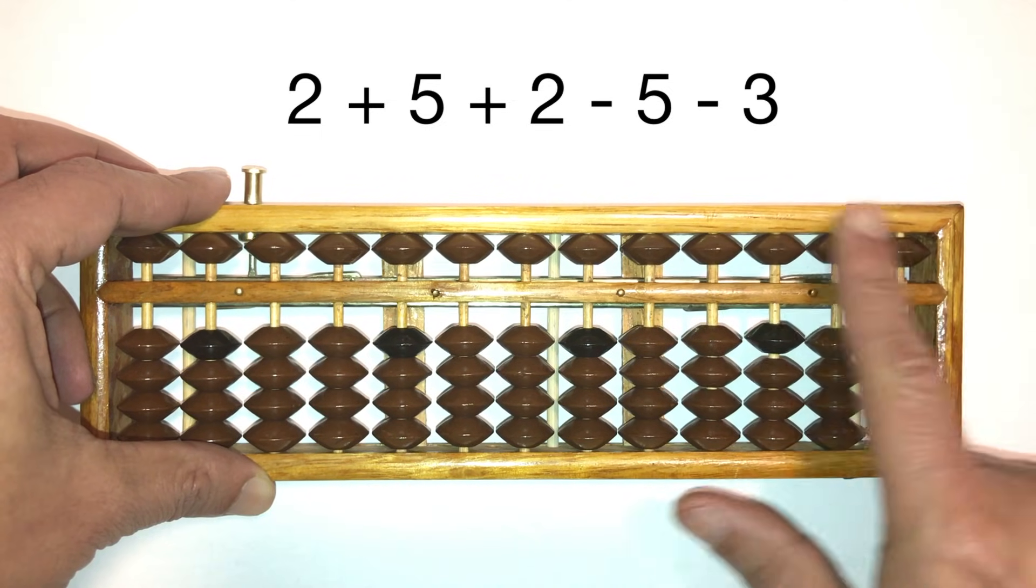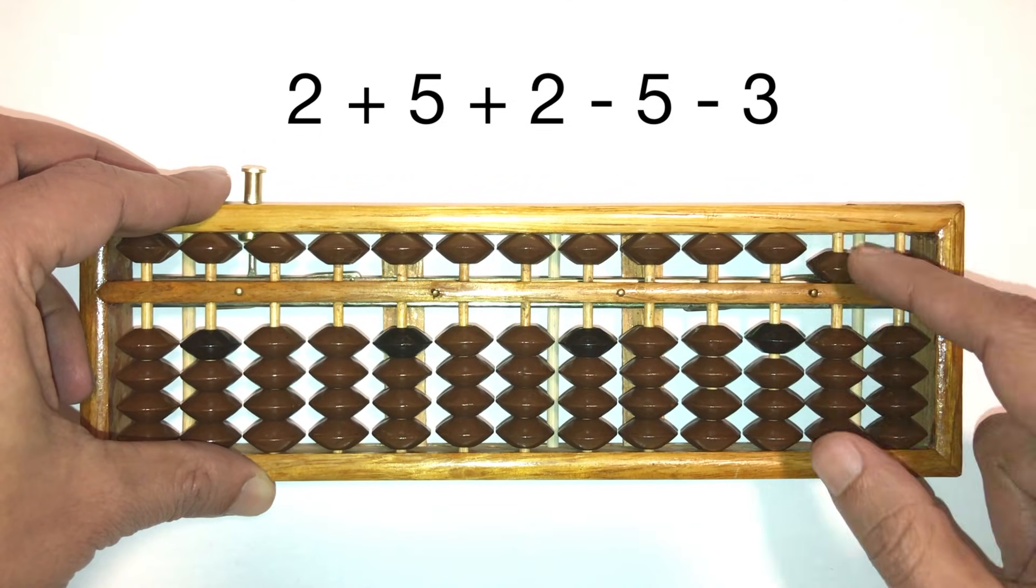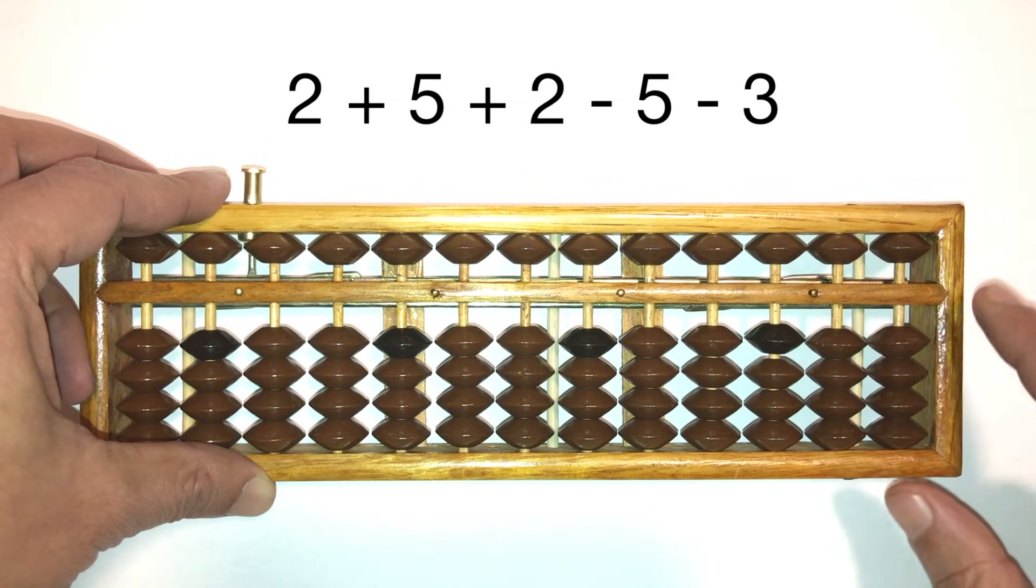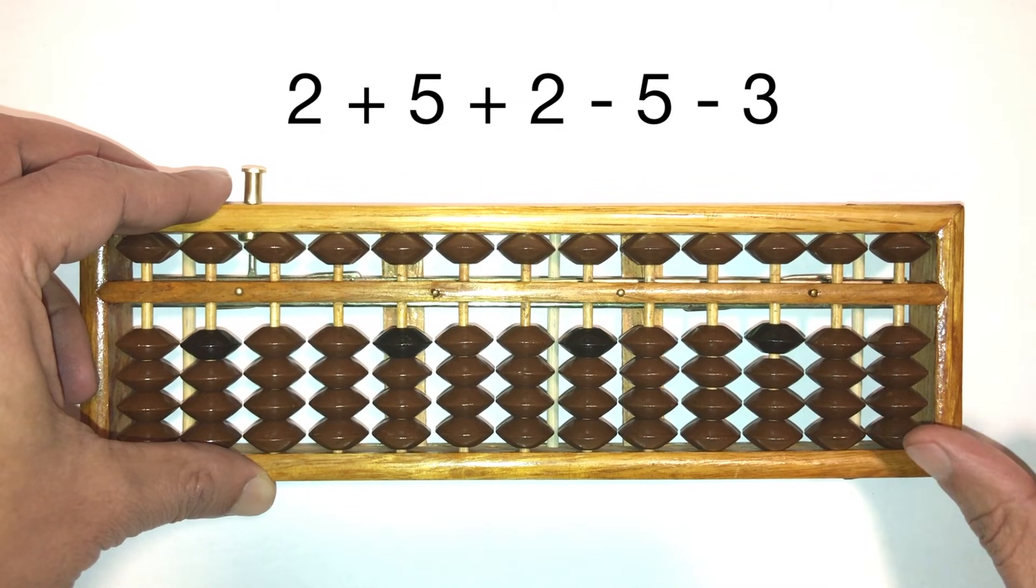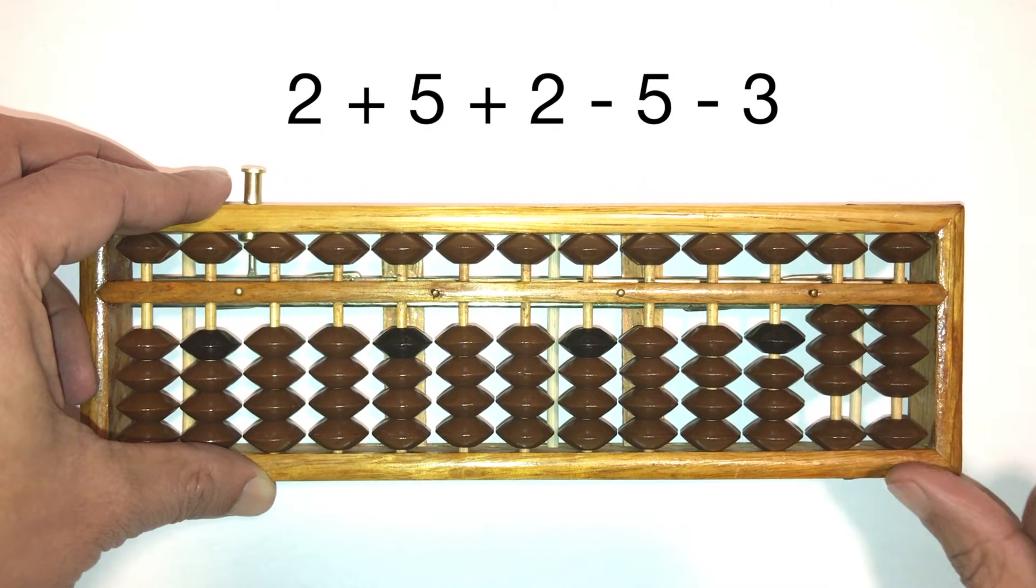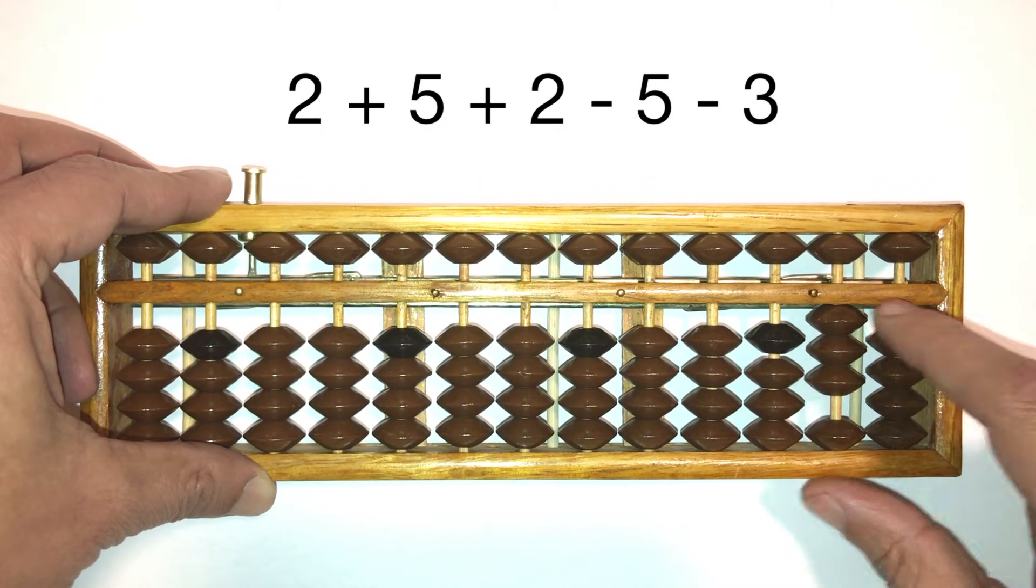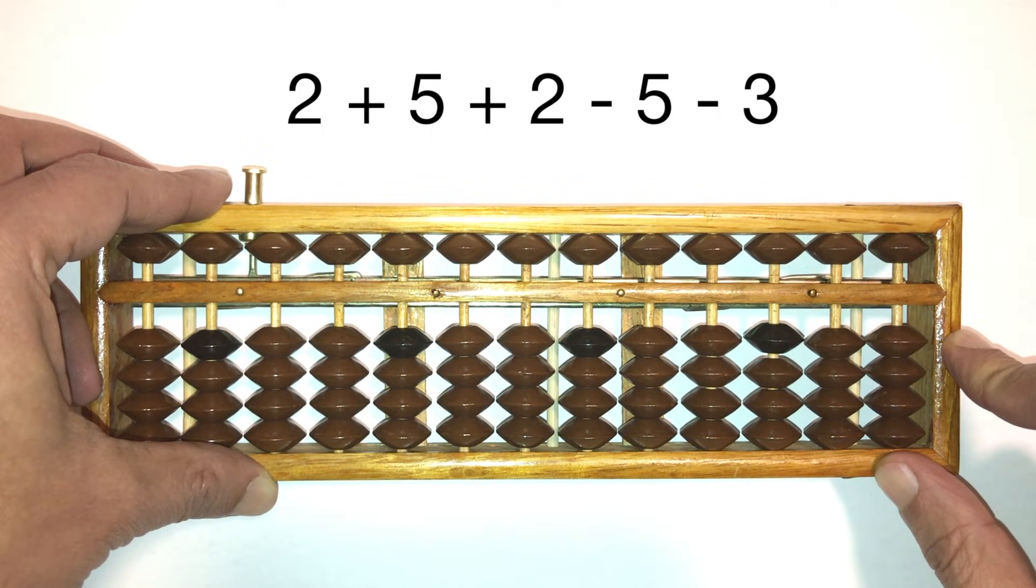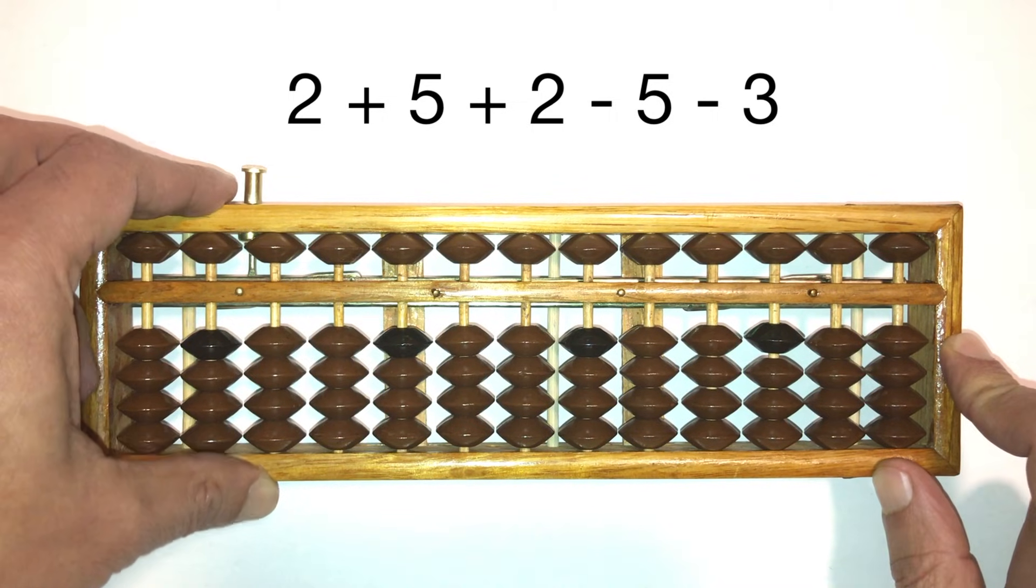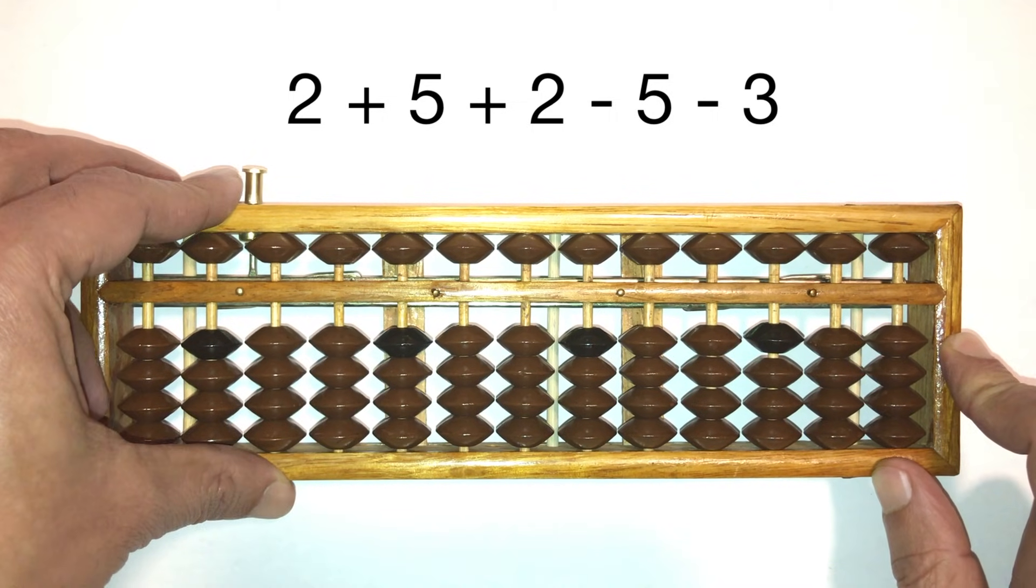For the upper beads, we add with the pointer and we take away with the pointer as well. So the only time we're using our thumb is to push the lower beads up towards the answer line or to add using the lower beads. For everything else, we use our pointer to either move the beads towards the answer bar or move them away from the answer bar.